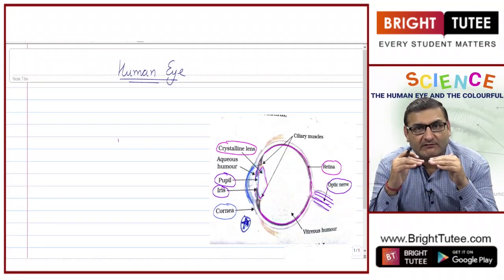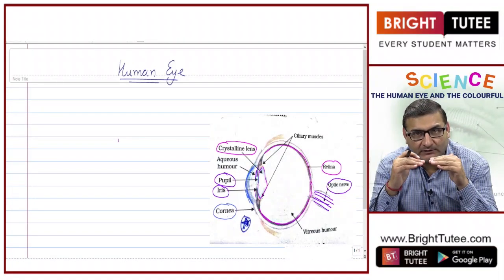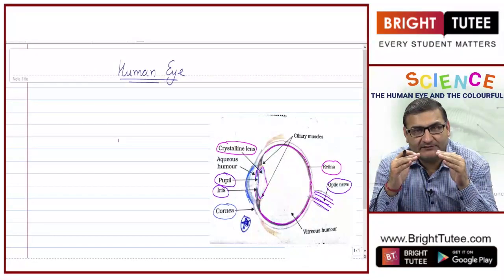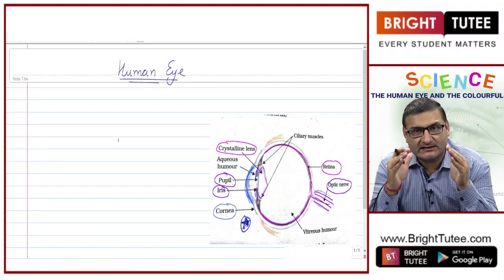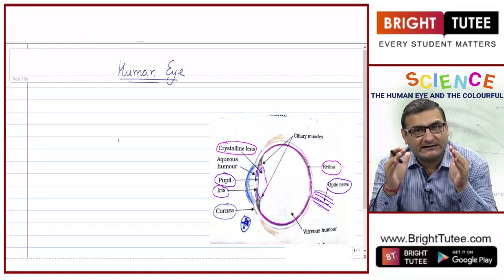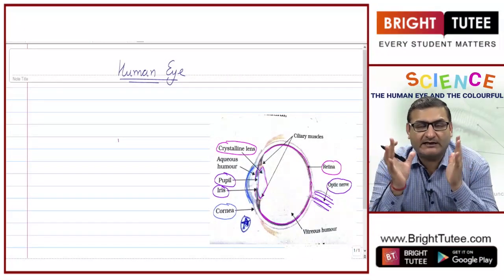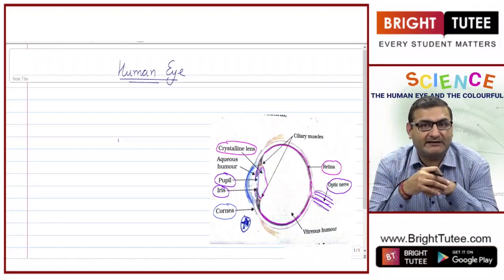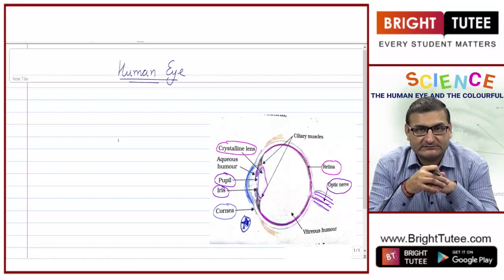Initially we face difficulty, but our iris adjusts itself — it is a diaphragm — it adjusts to increase the pupil size so that the maximum amount of light can enter our eye, and that is why after some time we are able to see everything clearly.